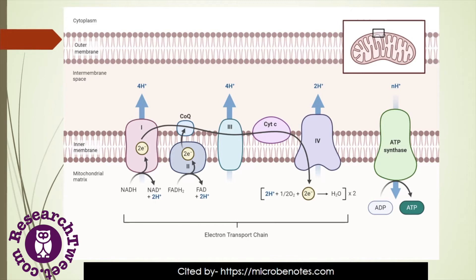Complex 1 is a large multisubunit complex that causes oxidation of NADH and passes electrons from NADH to Coenzyme Q. It is also an acceptor of electrons from NADH and NADP. Coenzyme Q, also known as ubiquinone, is a lipid-soluble benzoquinone linked to isoprene units. Complex 2 contains succinate dehydrogenase, an inner mitochondrial membrane-bound enzyme.